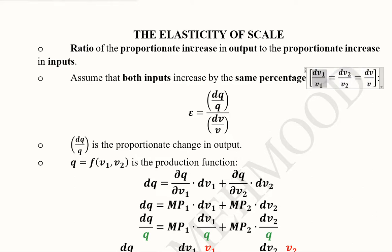This is the proportionate or percentage increase in the first input — the difference divided by the original value of the first input, v1. Similarly, the difference of the second input v2 divided by the original value of v2. Both are considered equal because in returns to scale we assume both inputs are equally increased. So we call them dv over v instead of using two separate notations with subscripts 1 and 2.